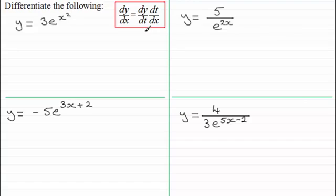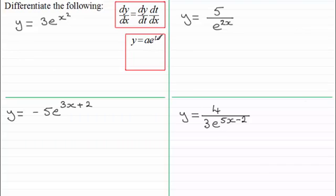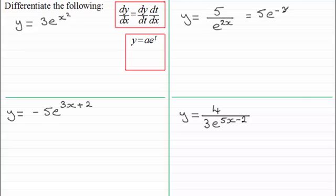Now I'm going to take this further and look at compound exponential functions. All of these examples are based around the form y equals a constant — I'll call it a — times e to the power t, where t is some function of x. In this example a would be 3 and t would be x squared. In this one a would be minus 5 and t would be 3x plus 2. A function like this can be rewritten as 5 times e to the power minus 2x, so t would be the minus 2x here.